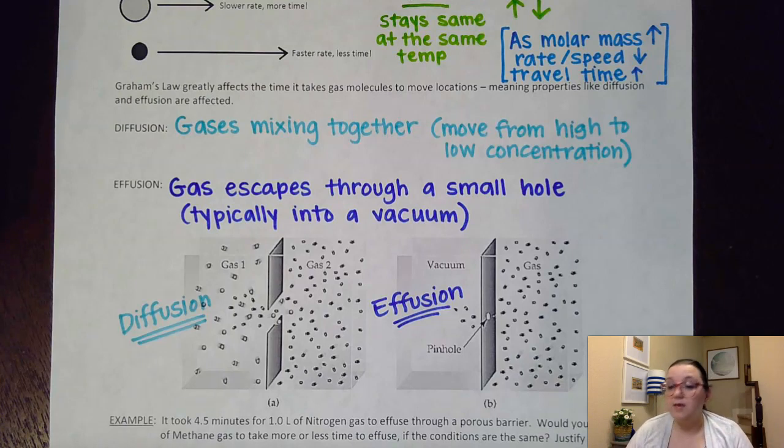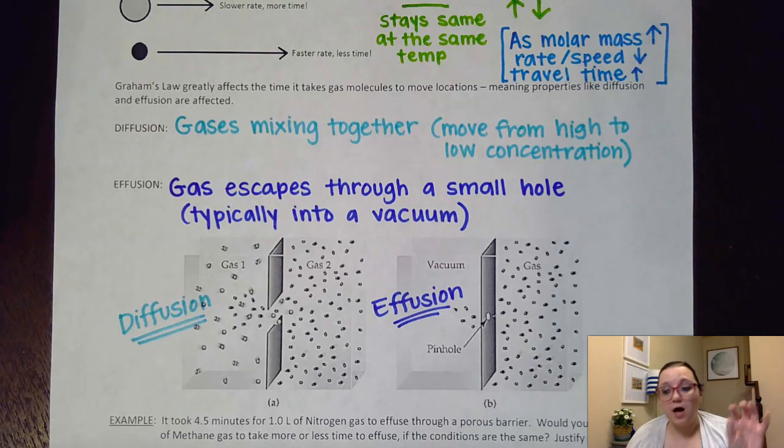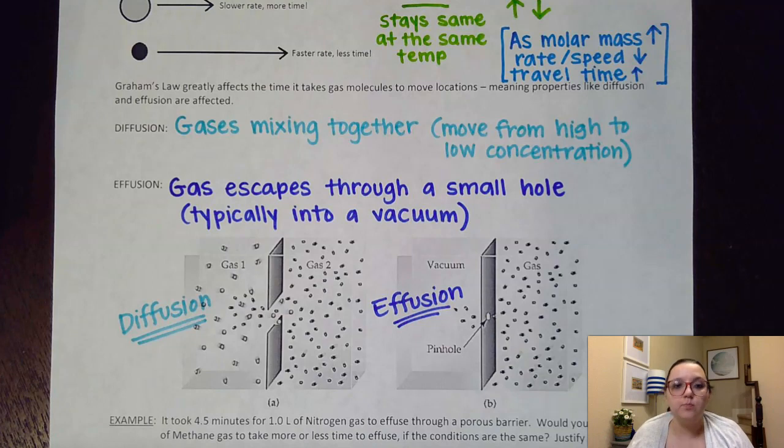Effusion is gas escaping through a small hole. Now I know it says here typically into a vacuum, but really it would just need to be into an area of lower pressure. So like, let's say for example, I had a tire that got a hole in it. Effusion would be the gas escaping out of that hole in the tire. Both of these properties are affected by Graham's law.